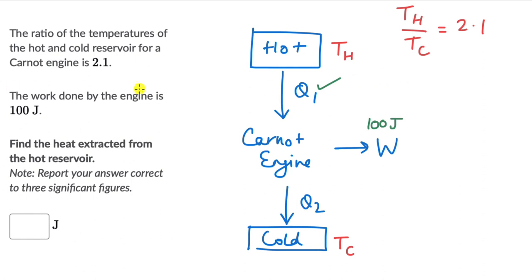One of them is the magnitude of Q1 equals the work done plus the magnitude of the heat that is rejected to the sink. And the other one which relates temperatures and the heat: we can write the ratio of the heat that is taken and the heat that is rejected, that equals the ratio of the temperature of the hot reservoir and the temperature of the cold reservoir. So this is TH divided by TC.